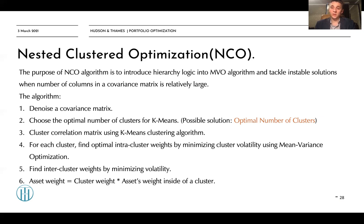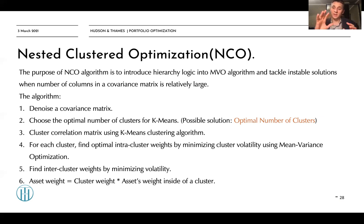Instead of trying to apply the whole algorithm to the big covariance matrix, we can split our covariance matrix into different clusters, optimize weights inside each cluster, and after that optimize weights at the cluster level as if each cluster is a separate asset. In this case, we apply the pattern of divide and conquer.